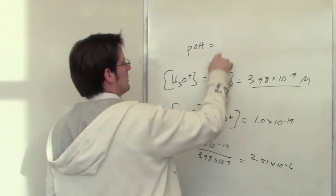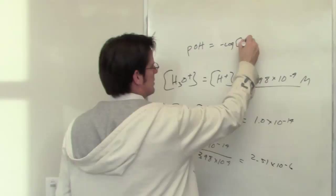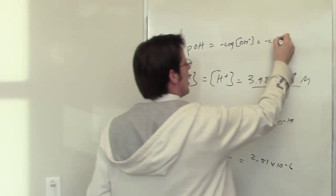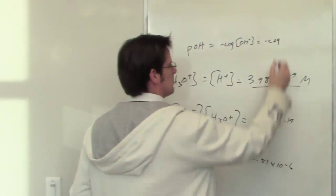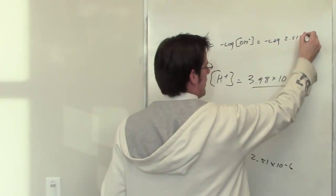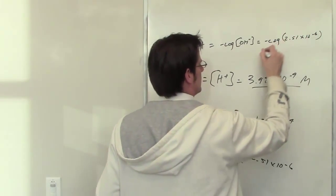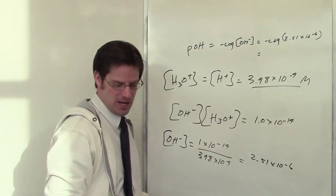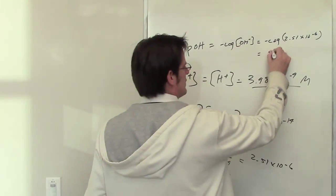Well, pOH is equal to the negative log base 10 of the hydroxide concentration, which is equal to negative log of this number, 2.51 times 10 to the negative 6th. I throw that into my calculator and I end up getting a final pOH value of 5.6.